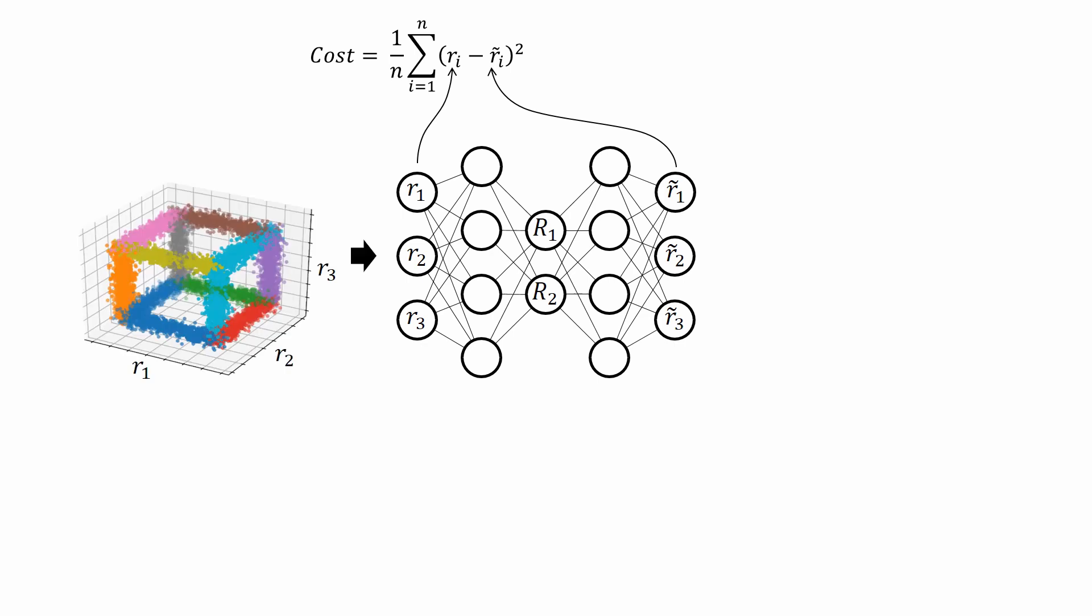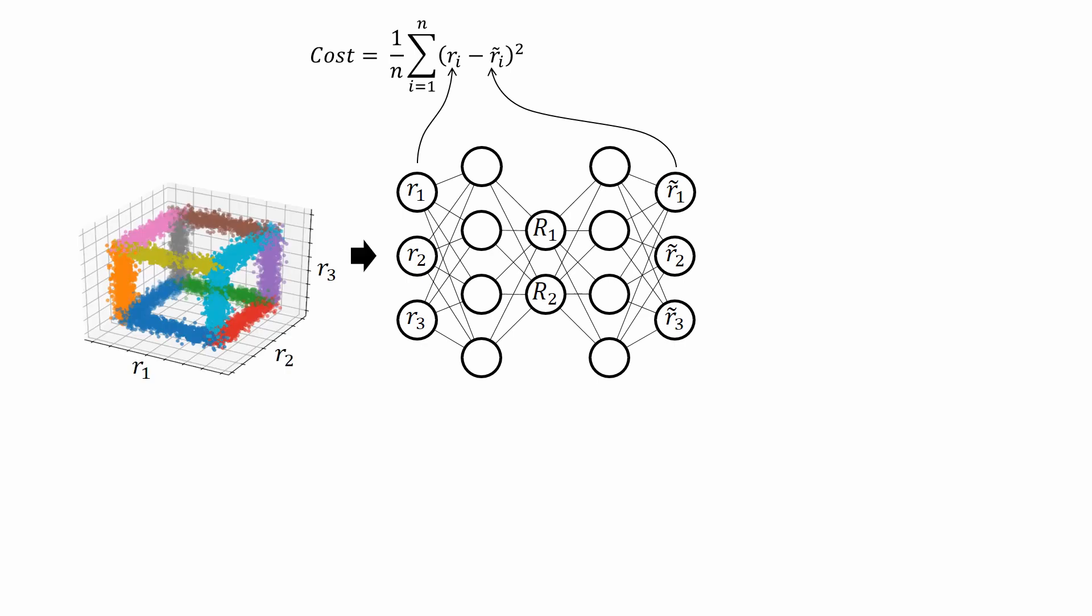In the following, I will use this little toy model for illustration. These are points randomly distributed on the edges of a cube with some Gaussian noise added. After some training, the outputs are similar to the inputs. This is what you can see here.